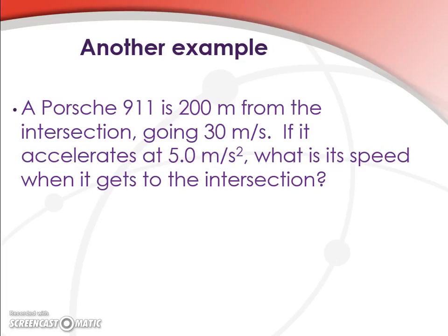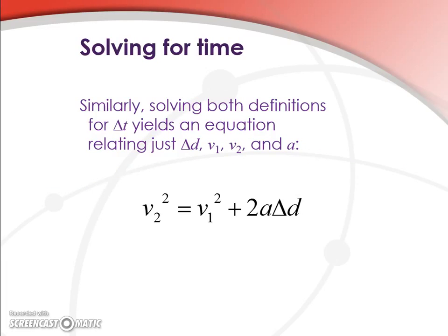But it's no different than the other situation. We simply say the thing we don't know is time, we isolate for time, and then rearrange the equation. And with a little bit of manipulation, our final speed squared, what we're trying to find, equals our starting speed squared plus two times the acceleration times the distance to the intersection.